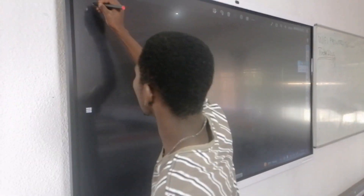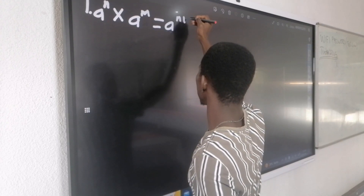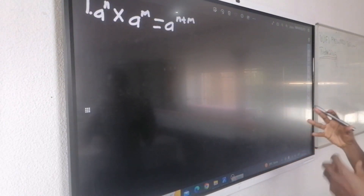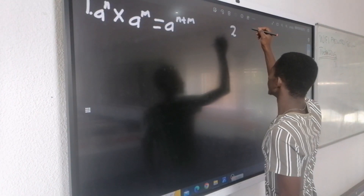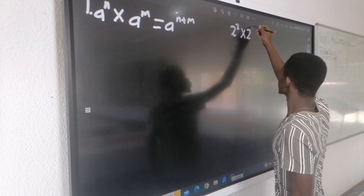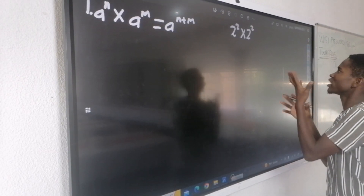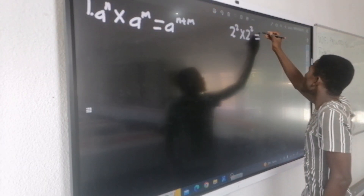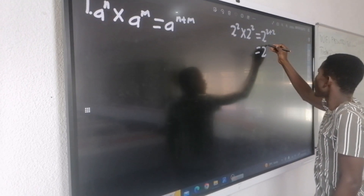Law number 1: if we multiply powers with the same base — this means my A has the same base — I am going to add the exponents, which are N and M. Always, whenever you see the same base, you add the exponents. This means if I have 2 to the power of 2 times 2 to the power of 2, those 2s are the same base. I take only one base, which is 2, and add 2 plus 2, which gives me 2 to the power of 4.